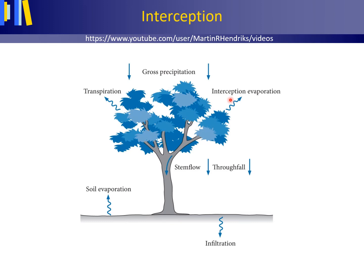Interception evaporation, thus, is the amount of water per unit of time evaporating from the leaves of trees or from the rooftops of buildings into the atmosphere.